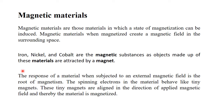What are magnetic materials? The response of a material when subjected to an external magnetic field is the root of magnetism. Magnetism is divided into categories: paramagnetism, diamagnetism, ferromagnetism, and anti-ferromagnetism. In magnetism, the spinning electrons in materials behave like tiny magnets, and these tiny magnets align in the direction of the applied magnetic field, thereby magnetizing the material.